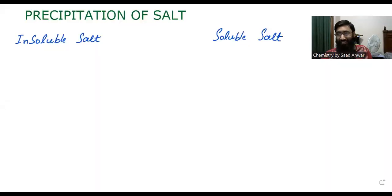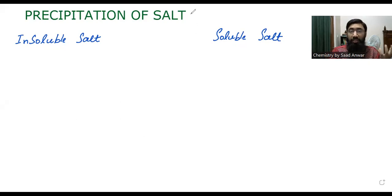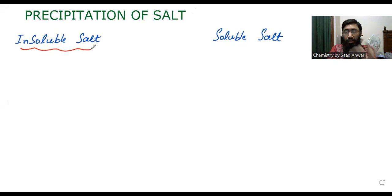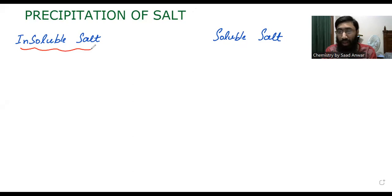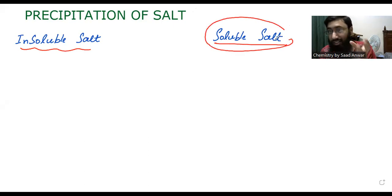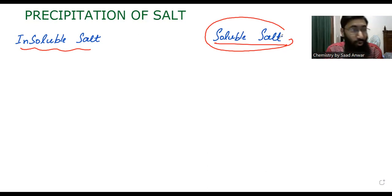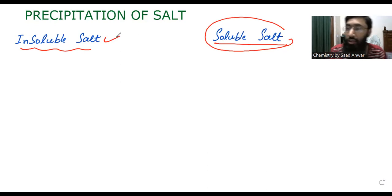Let me open a whiteboard. We are going to discuss the precipitation of salt. What is precipitation of salt? This is a method to prepare insoluble salt. If we want to prepare insoluble salt, we have to use the precipitation method. The method to prepare soluble salt is quite different and we will discuss that method in another video.